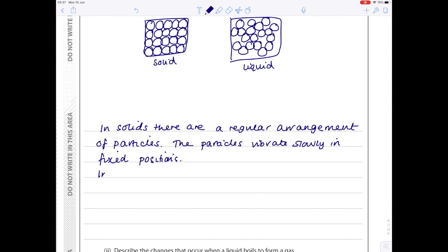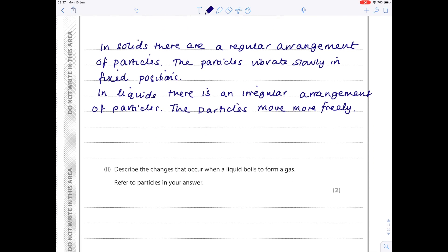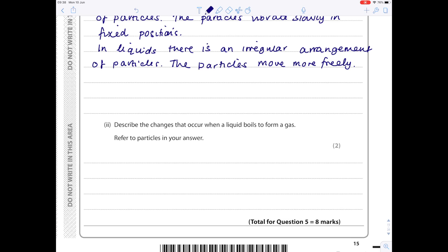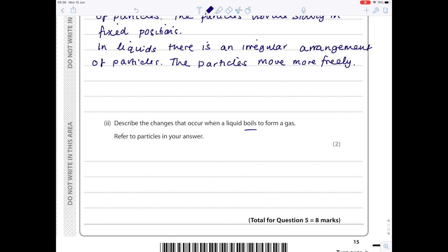Describe the changes that occur when a liquid boils to form a gas. Refer to particles in your answer. When a liquid boils, it gains kinetic energy. Particles gain kinetic energy. What happens when they form a gas is the particles with the most kinetic energy escape the liquid.